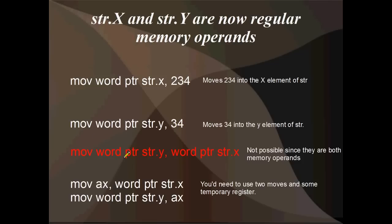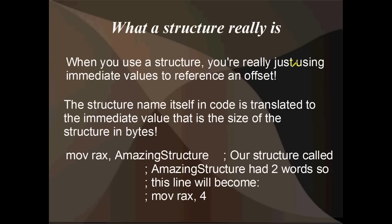Do note, though, as always, you can't use two memory operands in a single mov or any instruction for that matter. So this line here is illegal, and you'd have to do it in two steps. Something like mov AX, word ptr STR.X, and then move that from AX into Y.